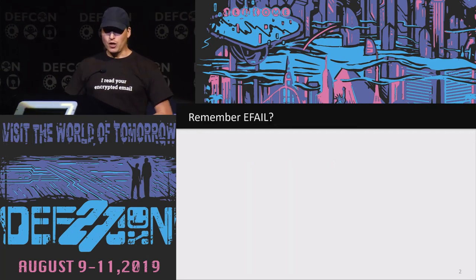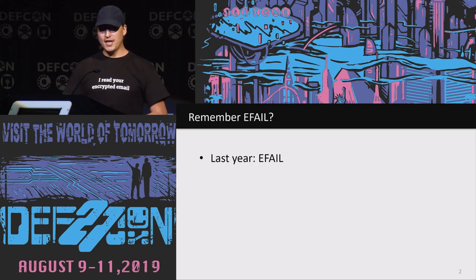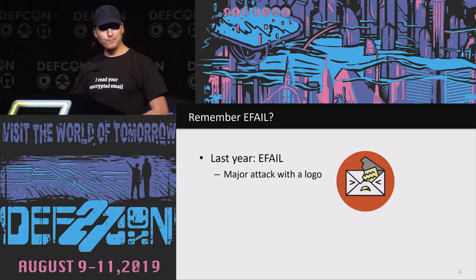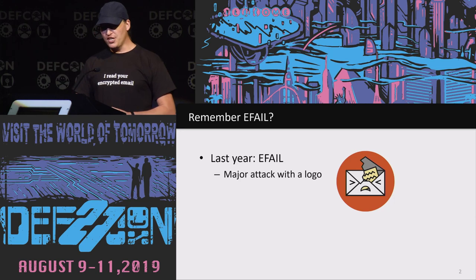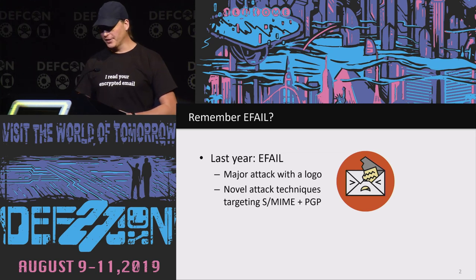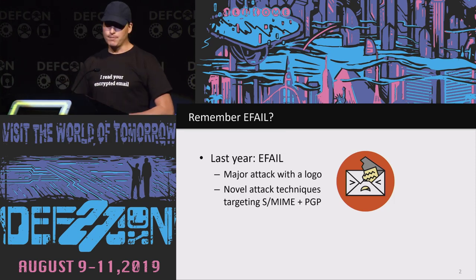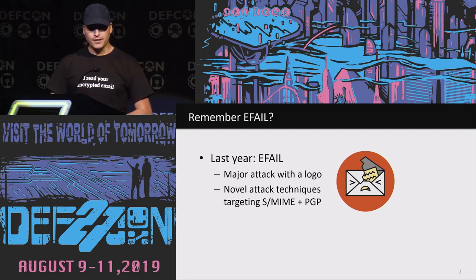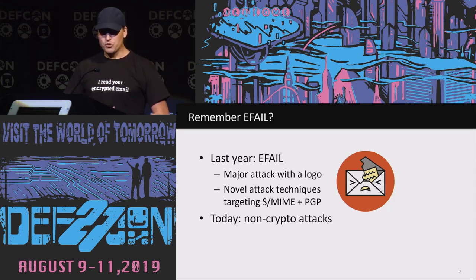What happened in the world of email security last year? E-Fail happened. Some of you may remember it — it was one of the most important attacks of last year, and one of those attacks that come with a logo. Besides some clickbait headlines, E-Fail was a real-world crypto issue targeting the cipher modes of operation in both PGP and S/MIME, with a lot of things not fixed until today. When we did E-Fail, we stumbled across some minor bugs in email clients. We looked deeper and found out — that's actually totally RFC-standard behavior of email, and that's what I'm going to talk about today.